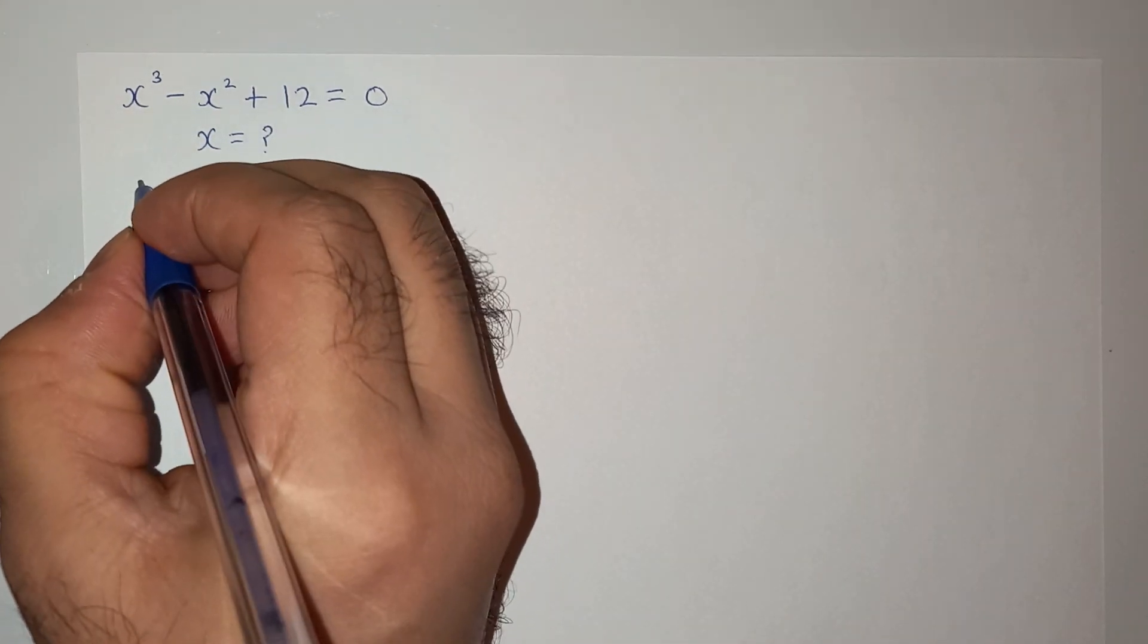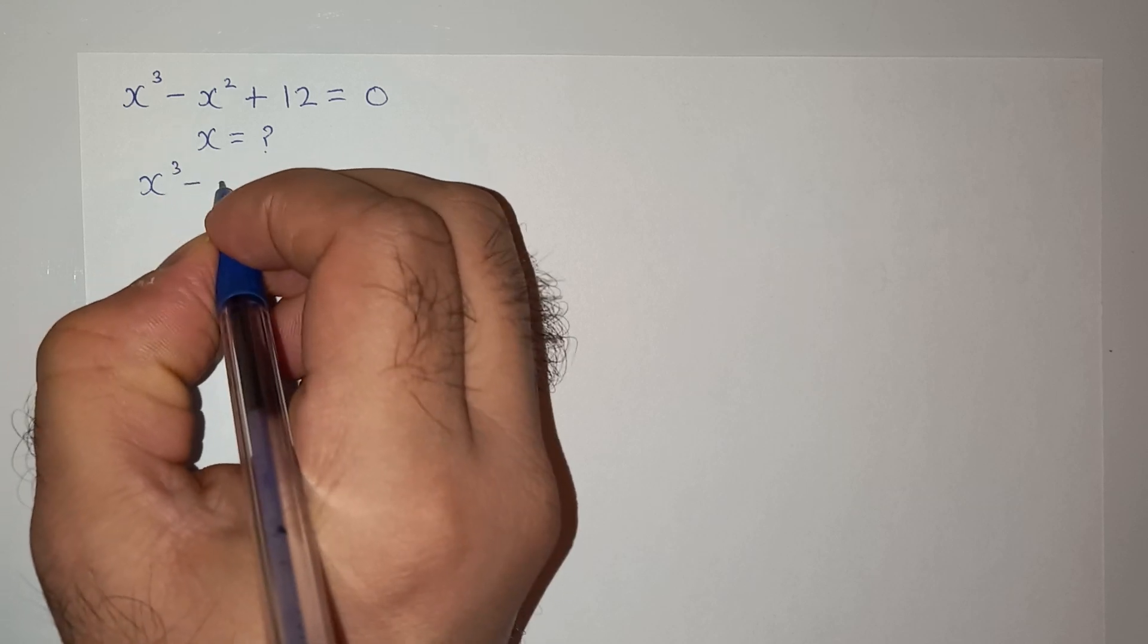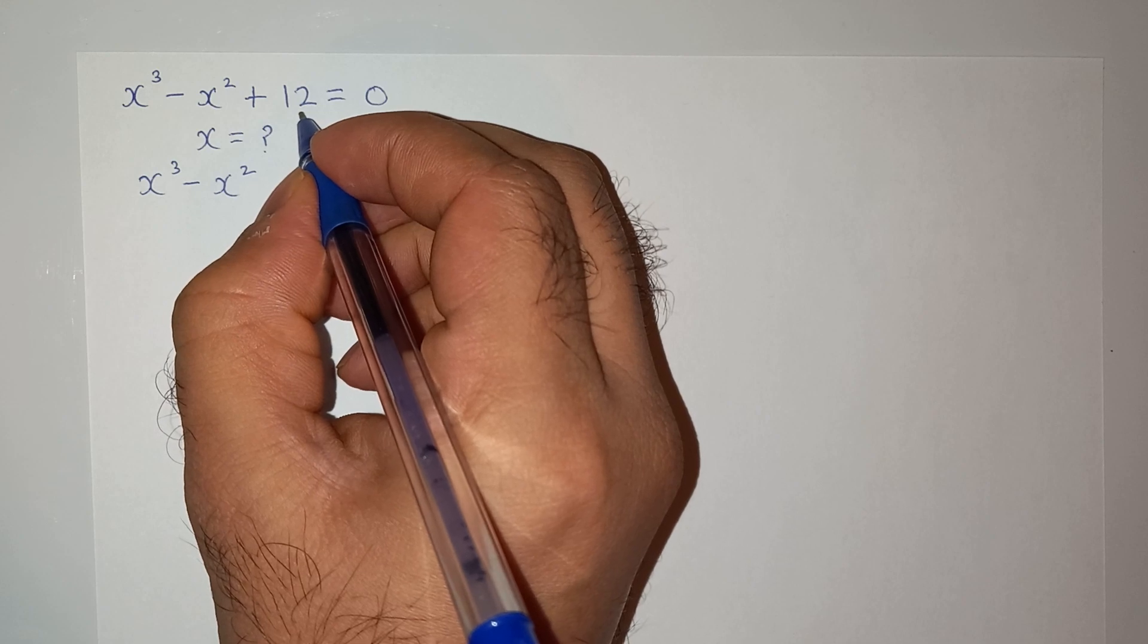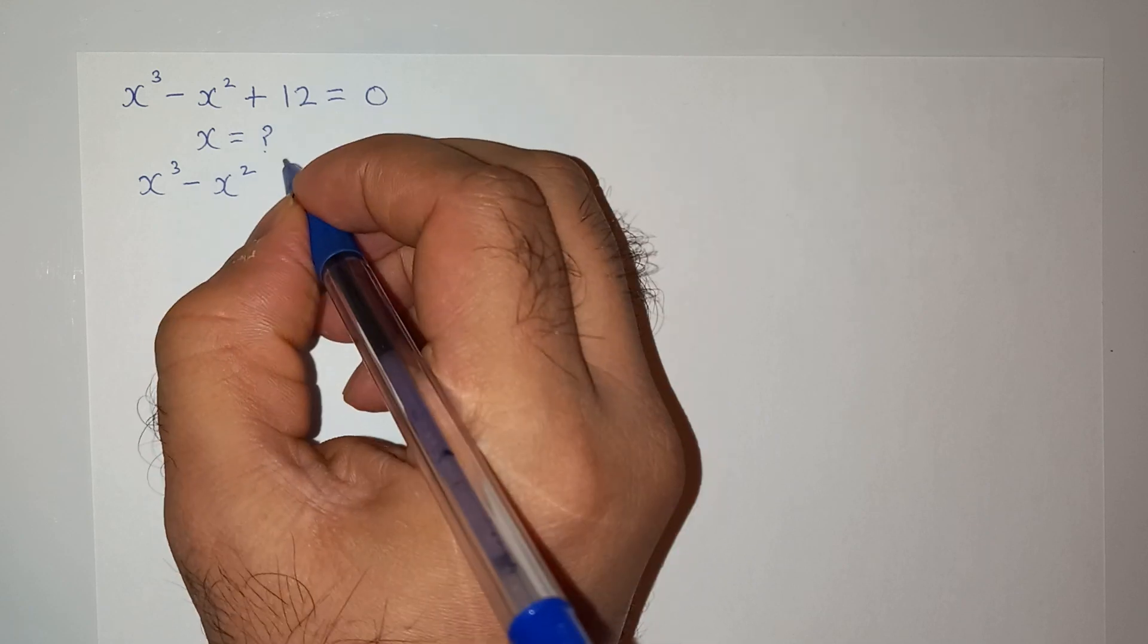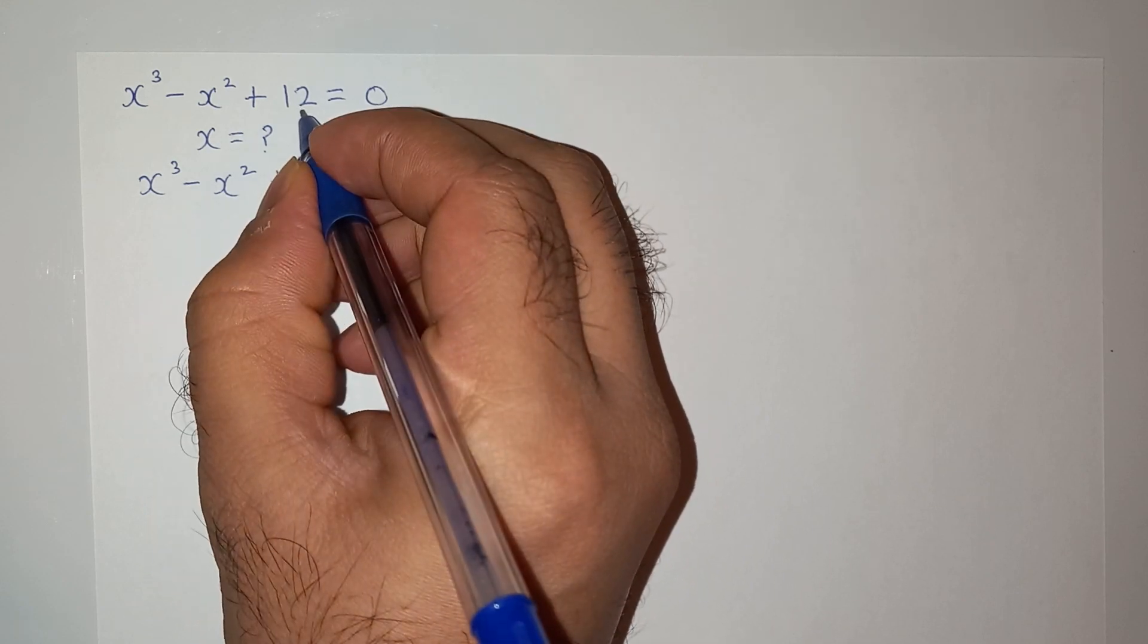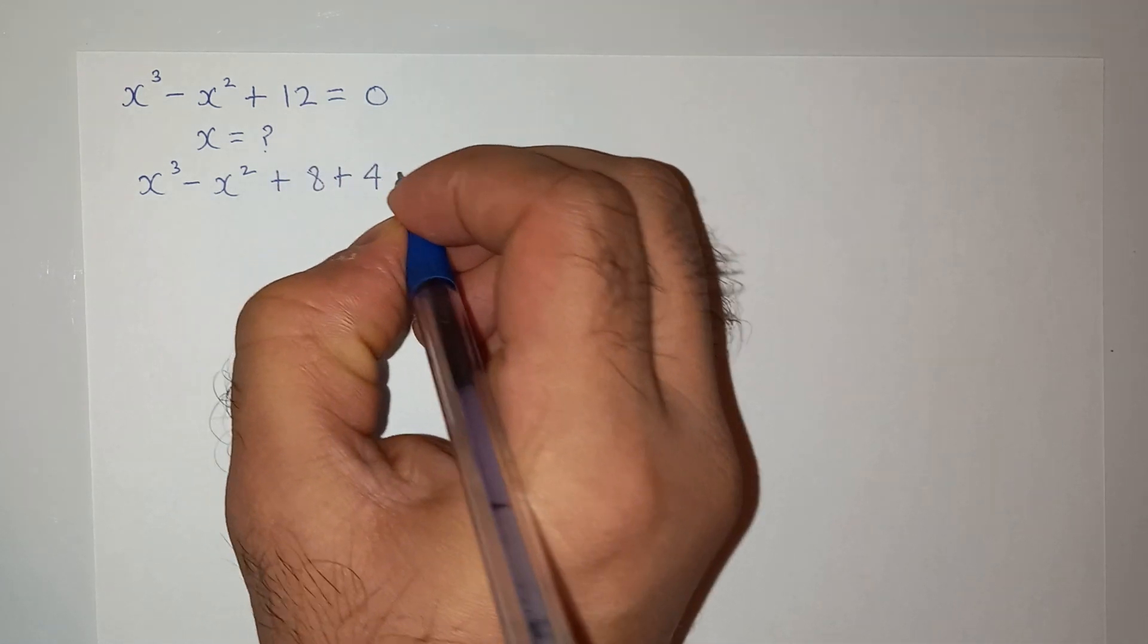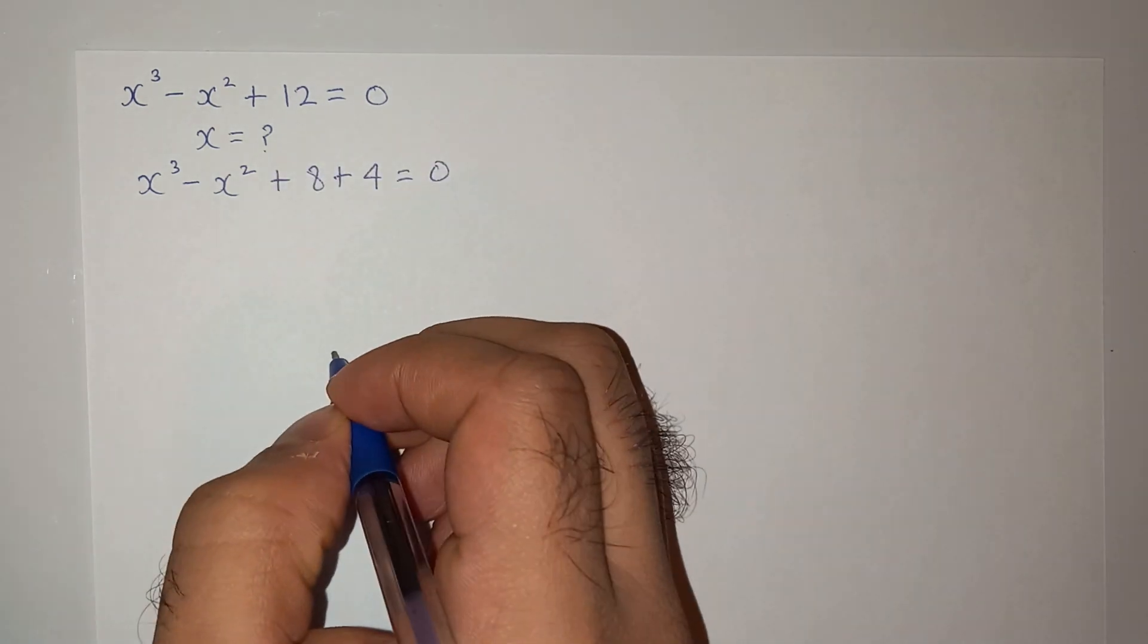We can write this as x cubed minus x squared, and 12 can be written as 8 plus 4. We have to be careful that the nearest cubic number to 12 is 8 plus 4. So this is the trick of this question.